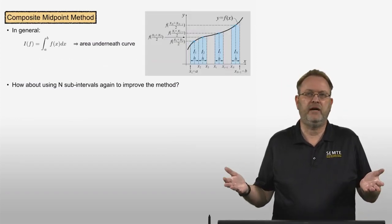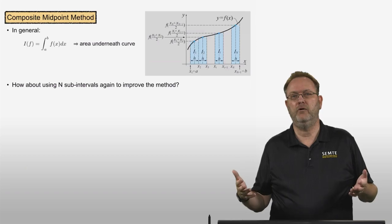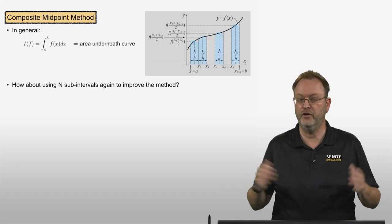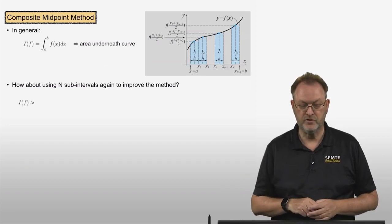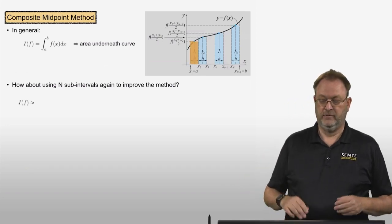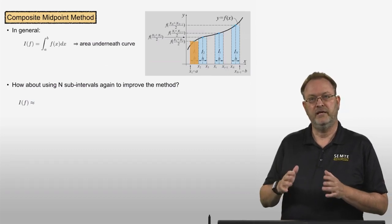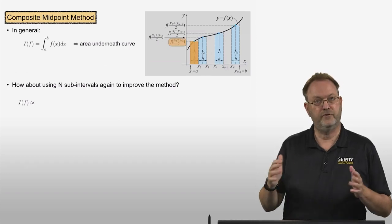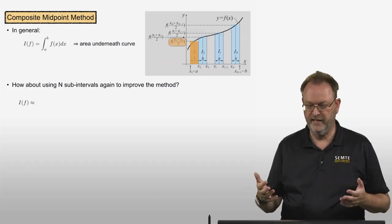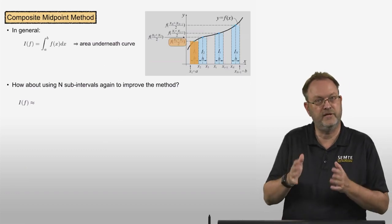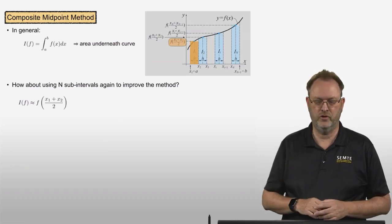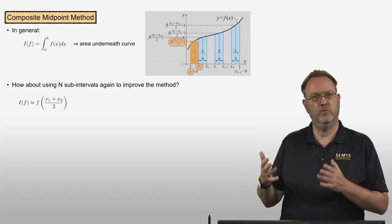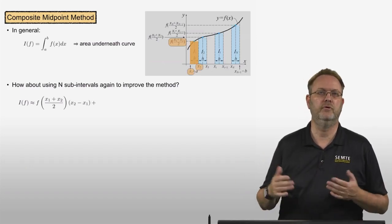That seems to be a better approximation, but how about going composite? We use n subintervals to improve the overall method. The integral would be the sum of all the areas underneath the subintervals. For the first subinterval, if it goes from x1 to x2, the midpoint is (x1+x2)/2, so the height of the rectangle is the function value there, times the width x2 minus x1.